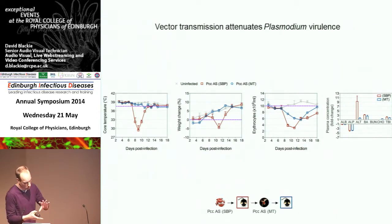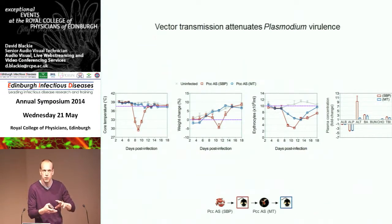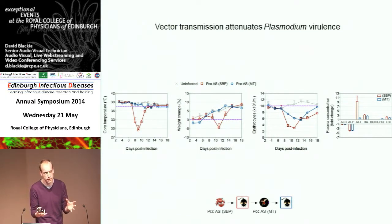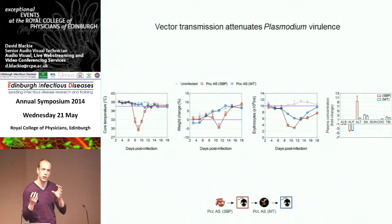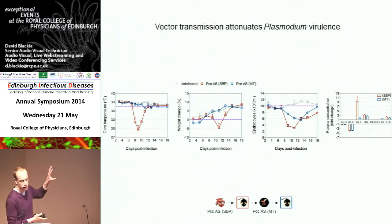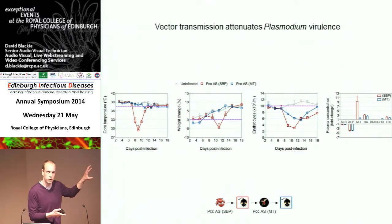One important point is that this has nothing to do with the route of infection or the parasite dose. It doesn't matter whether you give a single mosquito bite or 100 mosquito bites, or if you isolate sporozoites from the salivary glands and inject them intravenously or intradermally, or if you give 10 sporozoites or 10,000 sporozoites — you always see exactly the same phenotype: attenuation of parasite growth and pathogenicity.